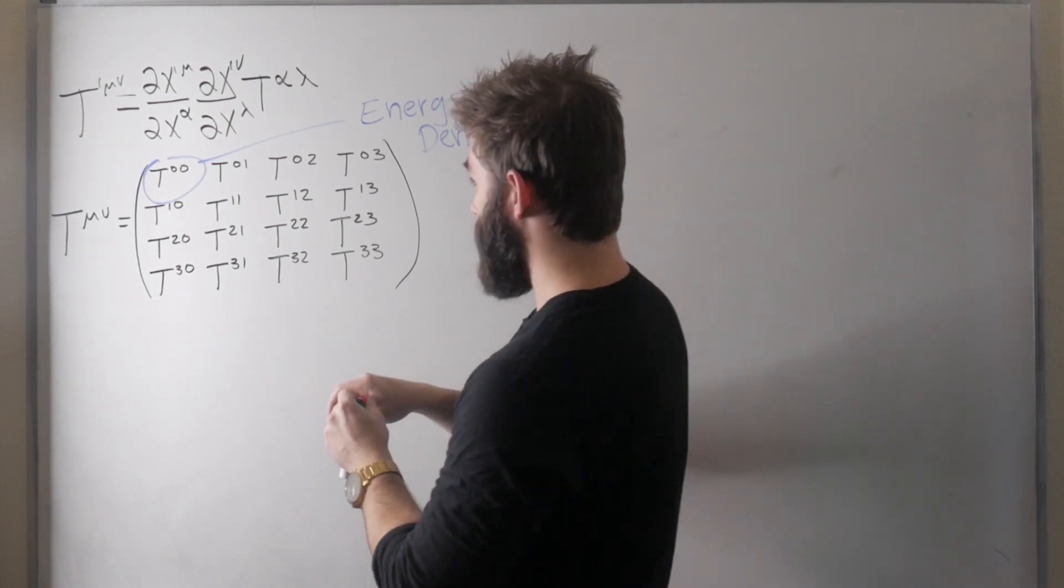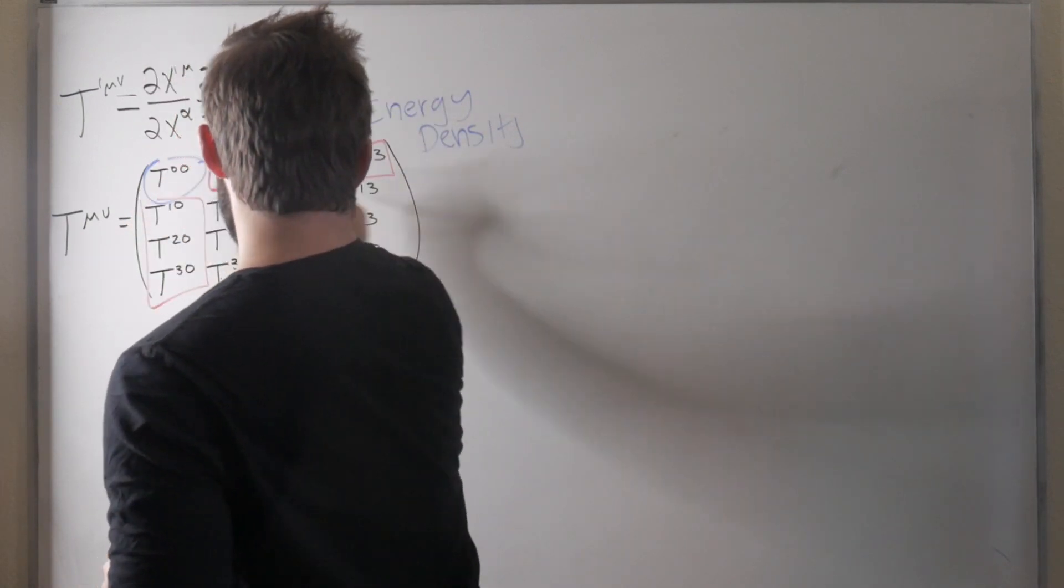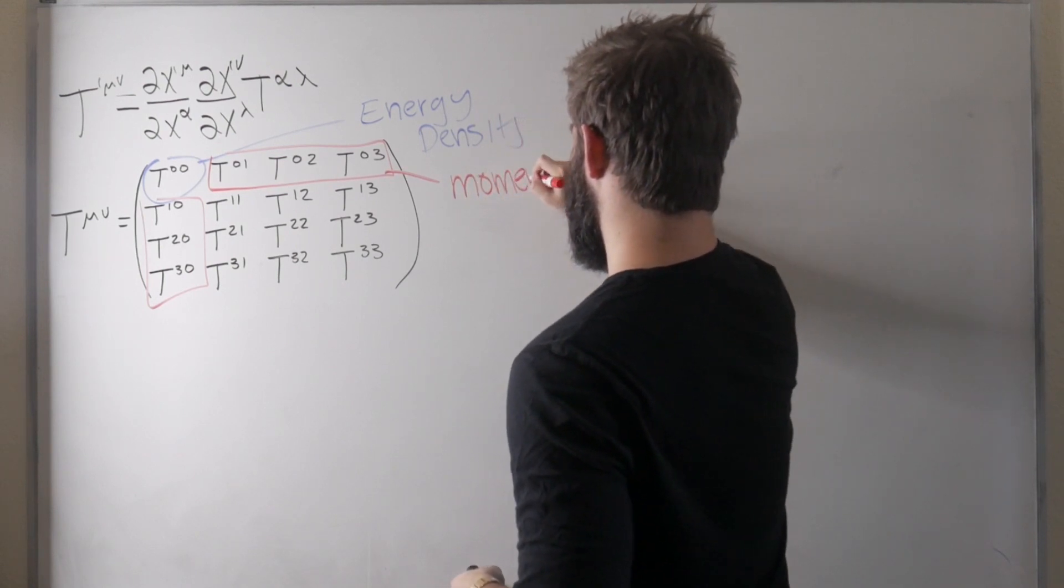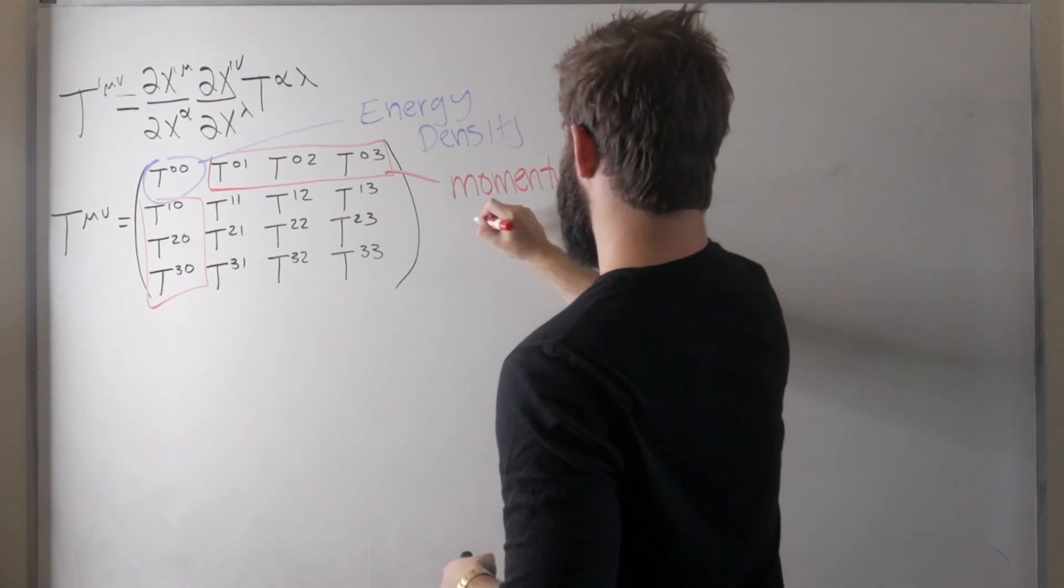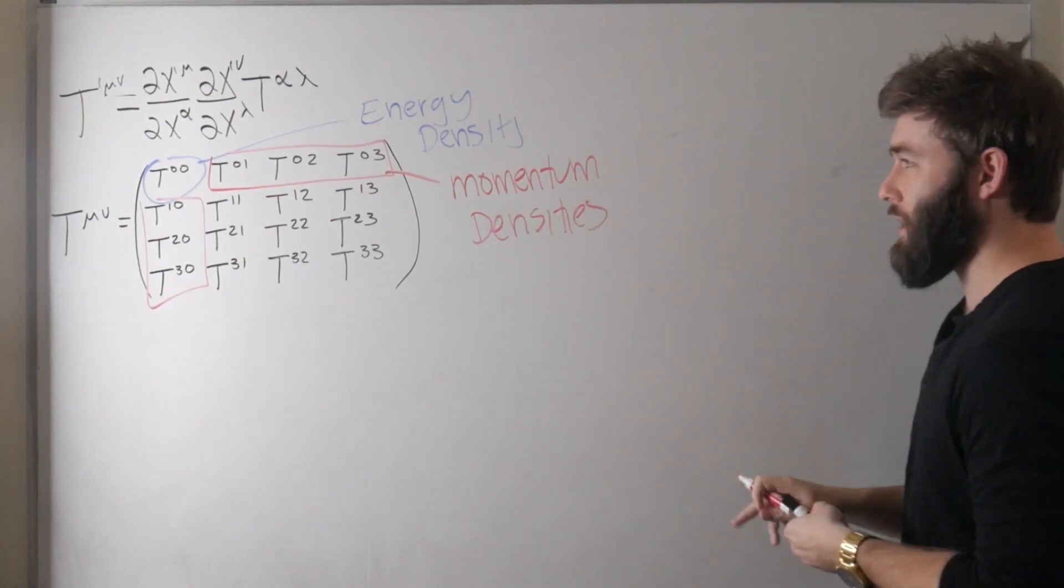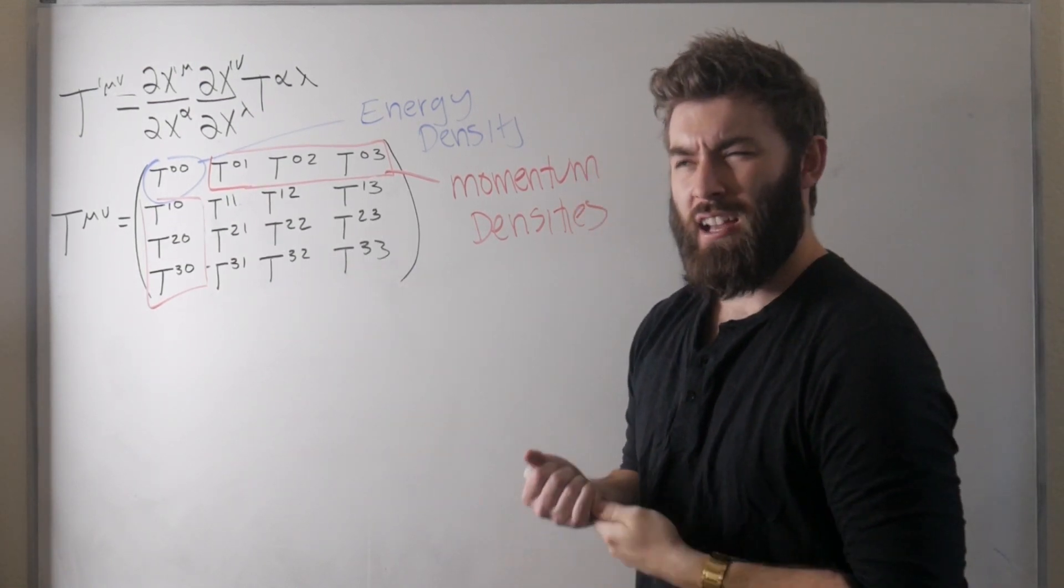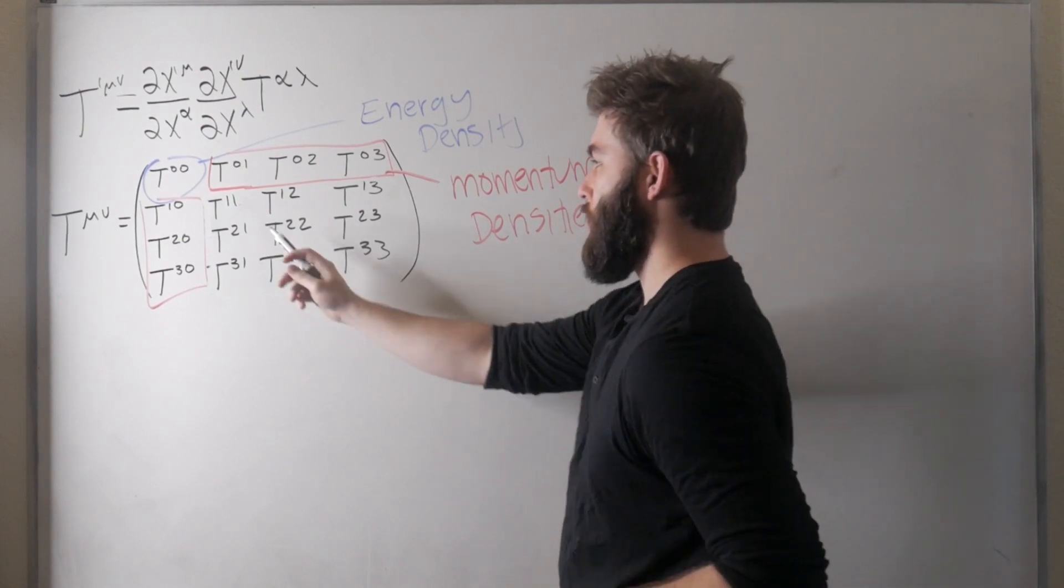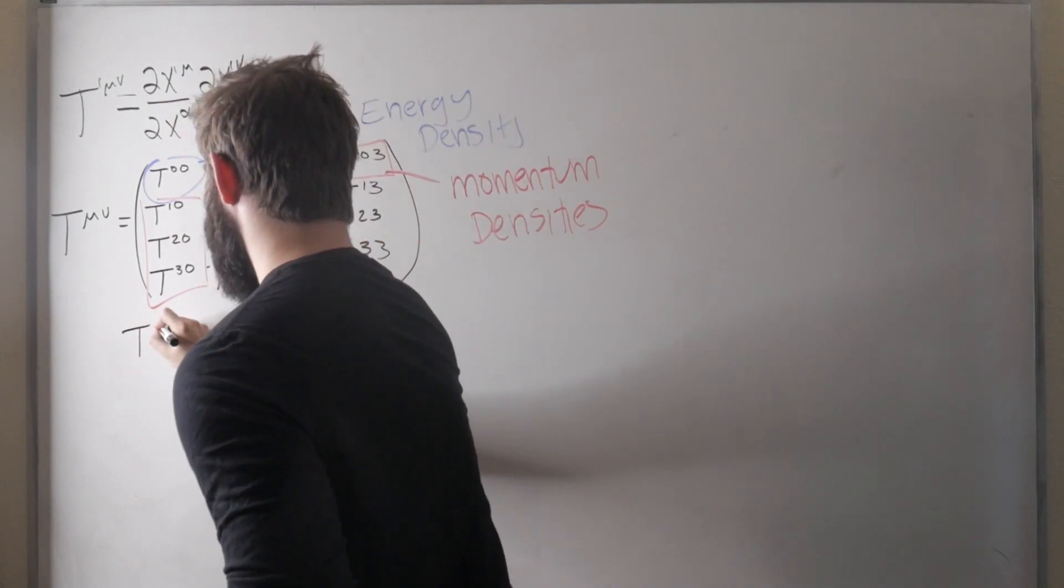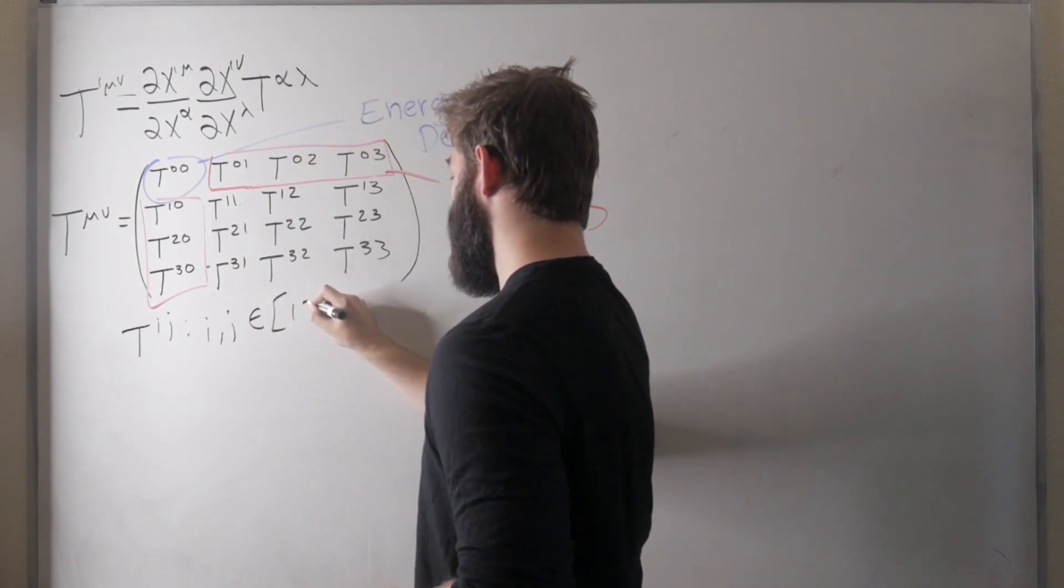Similarly in that same frame we can take a look at these terms here and these are going to be momentum densities. Okay that's also kind of like an energy flux. Now this bottom right block probably deserves a bit more of an explanation. I'm also out of different colors so I'm just going to use indexing so i j ones twos and threes and combinations not the zeros. I'm just going to call that tij so i j are either one two or three.